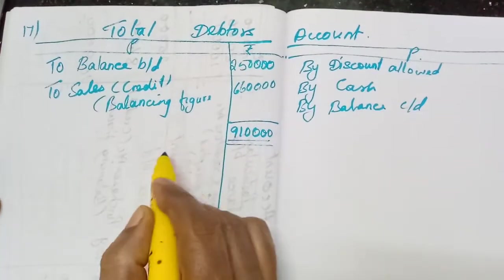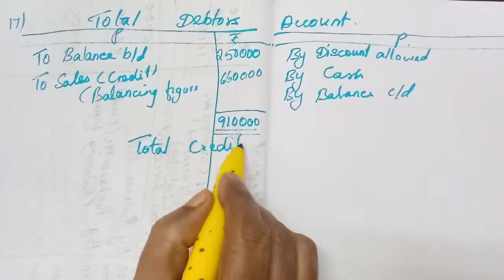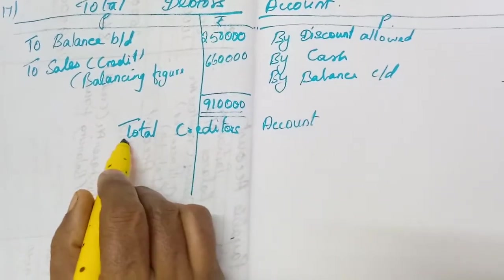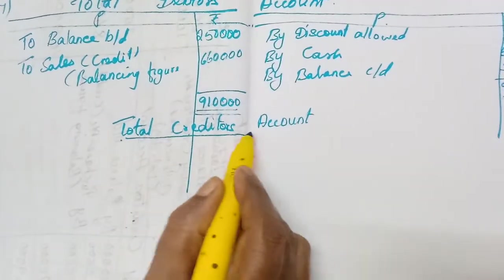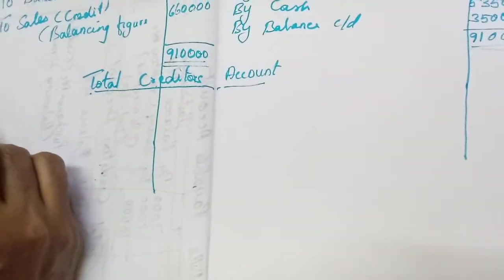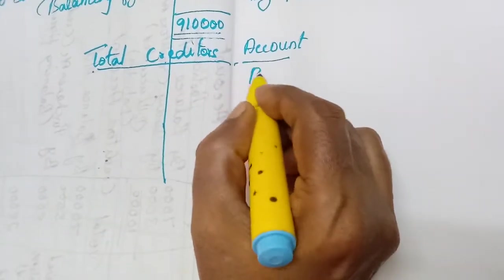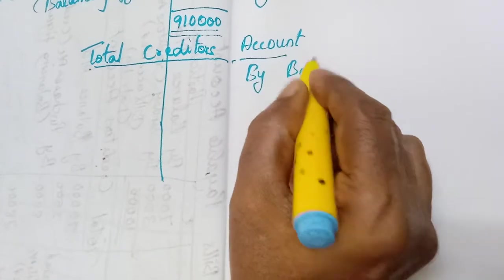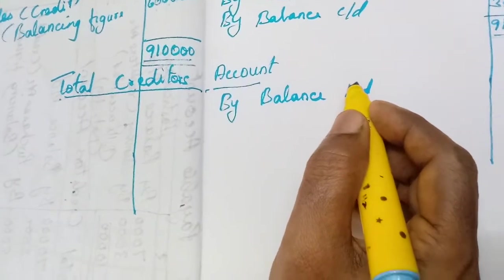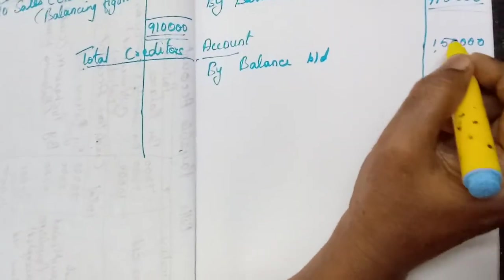Now we will prepare the next account: total creditors account. It is easy if you listen — they often ask one 5-mark problem on this. In the creditors account, the balance is a credit balance. Write 'By balance brought down.' From the tabular column, sundry creditors opening balance is 1,50,000. Write that: 1,50,000.